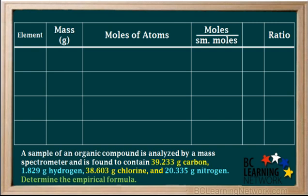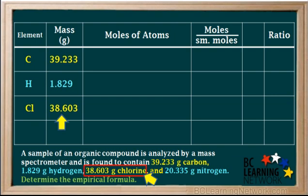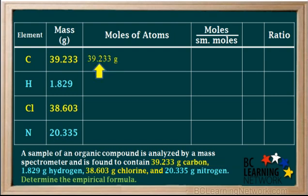The first element is carbon, with a mass of 39.233 grams. The next element is hydrogen, with a mass of 1.829 grams. Then chlorine, with a mass of 38.603 grams. And finally nitrogen, with a mass of 20.335 grams. Now to calculate the moles of atoms of carbon, we take the grams of carbon and multiply by the conversion factor 1 mole of C atoms per 12 grams. Notice we write the atomic mass of carbon by the grams. This gives us 3.27 moles of carbon atoms.